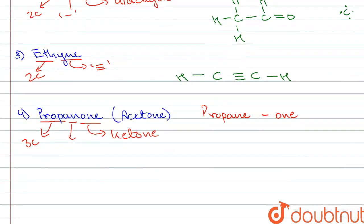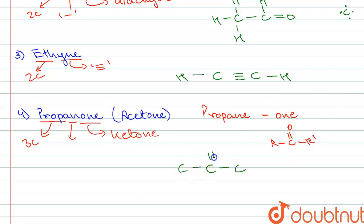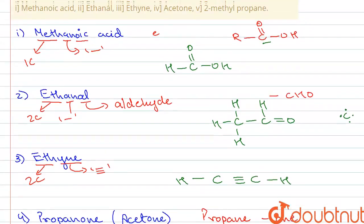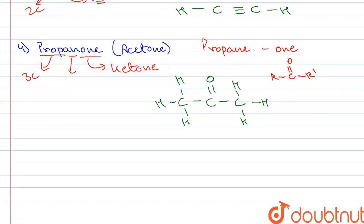The general structure for a ketone is R–C(=O)–R'. It contains three carbon atoms — carbons one, two, and three — with the C=O attached to the middle carbon and hydrogen atoms on the remaining valencies. This is the structure of acetone, also called propanone.